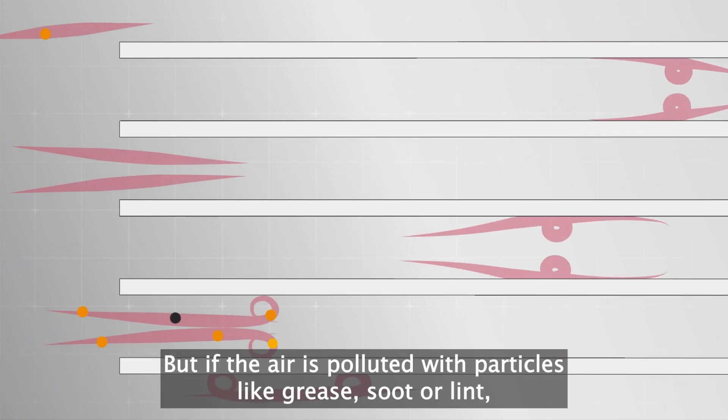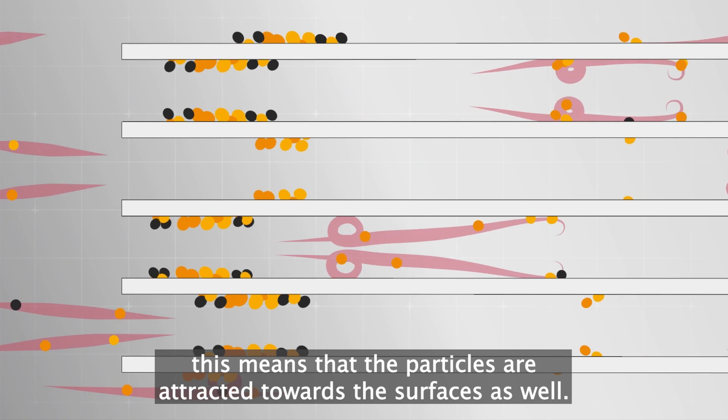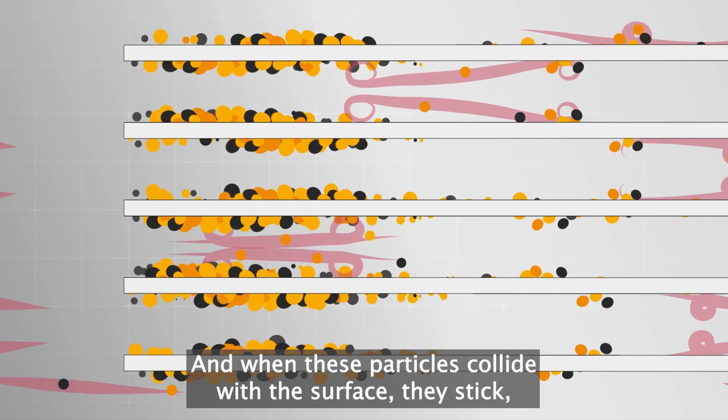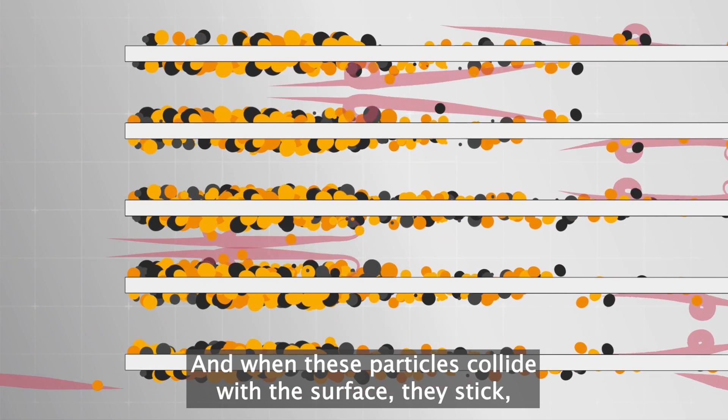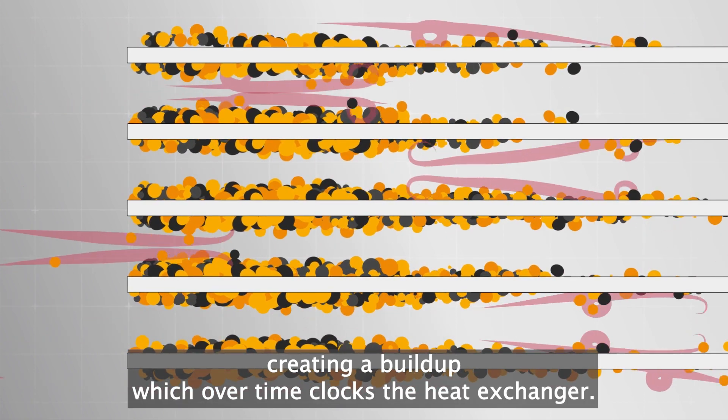But if the air is polluted with particles like grease, soot, or lint, this means that the particles are attracted towards the surfaces as well. And when these particles collide with the surface, they stick, creating a build-up which over time clogs the heat exchanger.